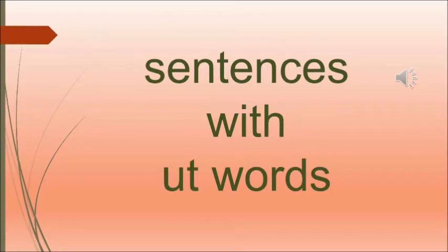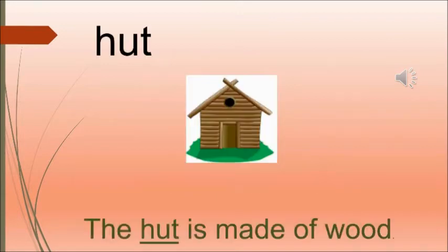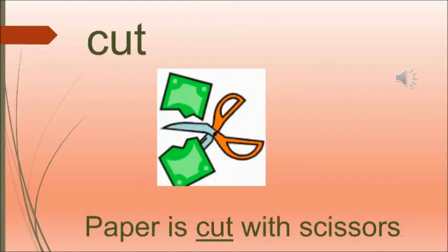Now, let's see a few sentences with the 'ut' words. Hut — the sentence is: the hut is made of wood. The next word is nut — the squirrel likes to eat nut. What does the squirrel do? It likes to eat nut. The next one is cut — paper is cut with scissors.